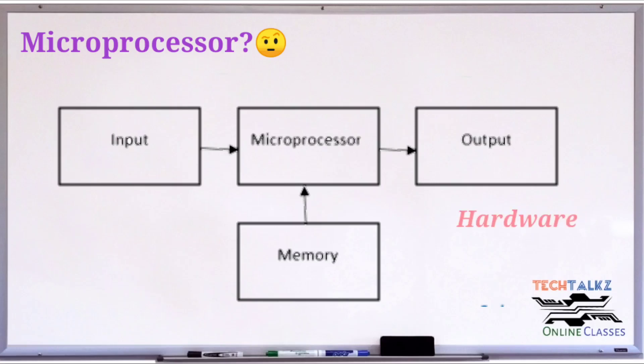The physical components of this system are called hardware. A set of instructions or commands written for the microprocessor to perform a task is called a program. And a group of programs is called software.